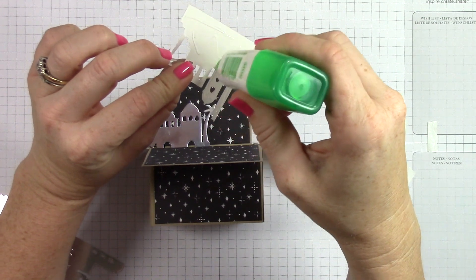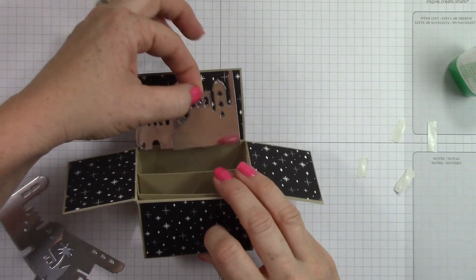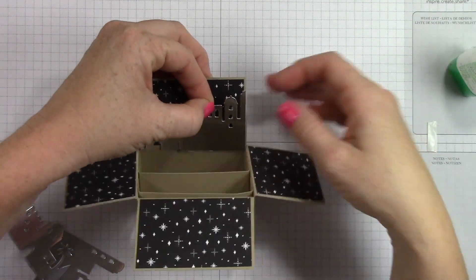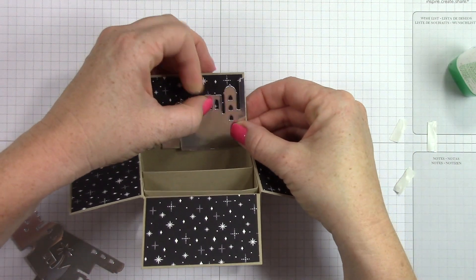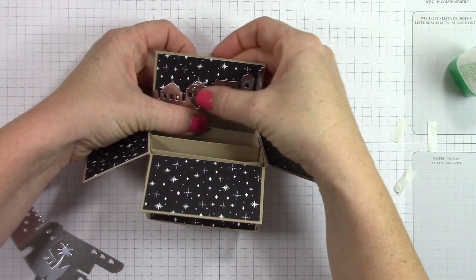If you don't want yours to stick up straight and you want it to flop over, then you would just adhere this to only the box part and let that other flap fall back. But I wanted mine to stay up, so it was like a night sky in the background.